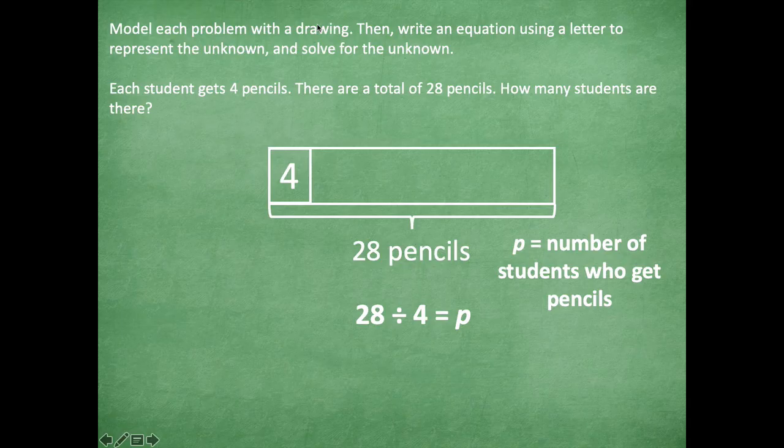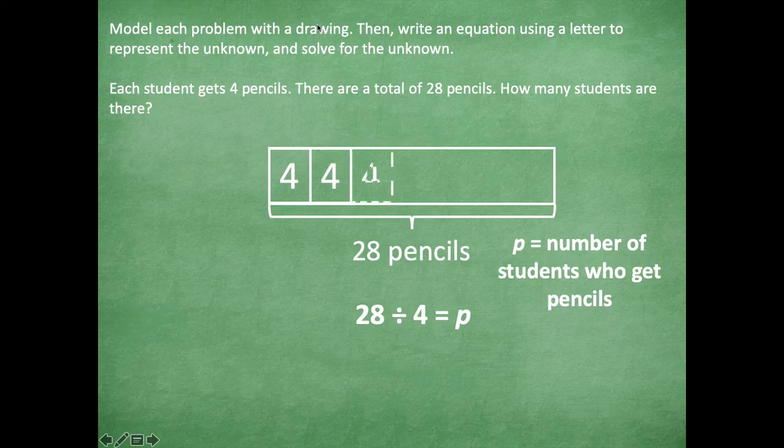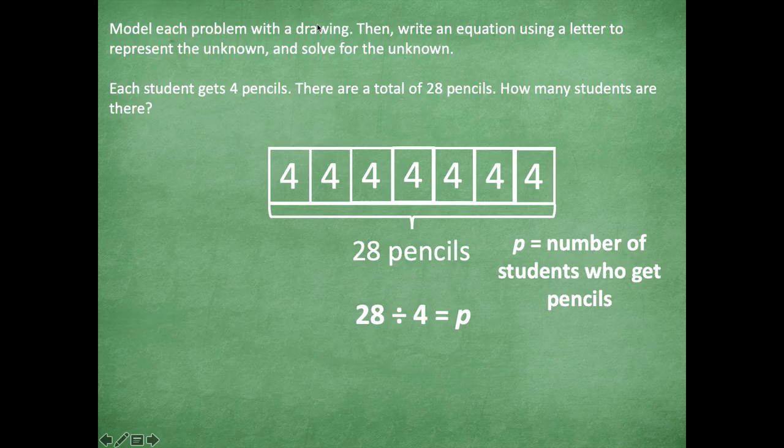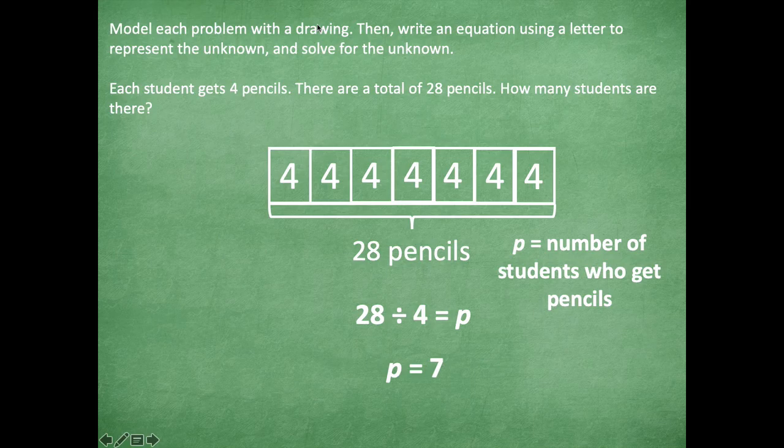Now I'm going to skip count by fours until I get to 28. So: 4, 8, 12, 16, 20, 24, 28. So as I go through, I can count the number of students, which is each one of those boxes, and I know that I have seven. So P equals seven. So there are seven students who got pencils.